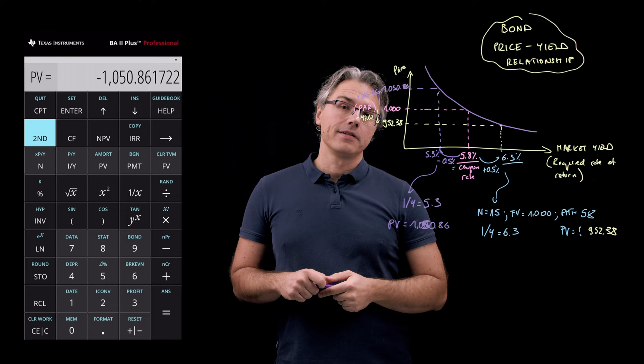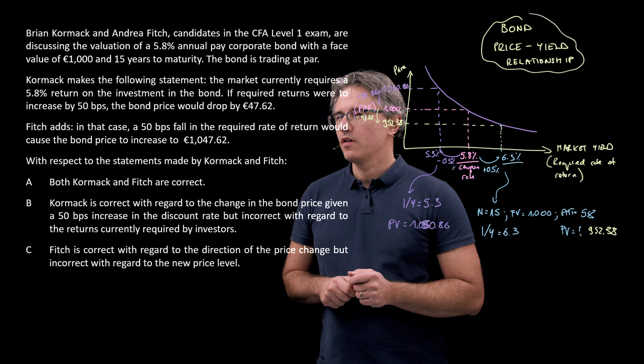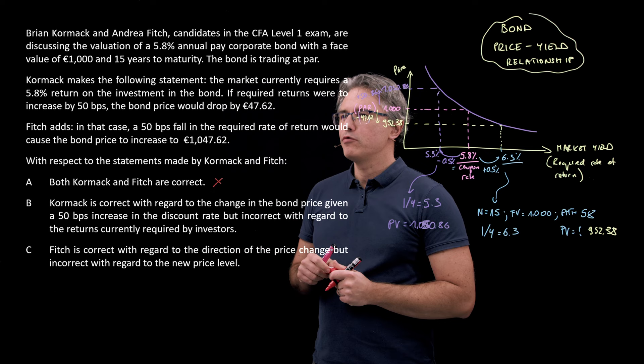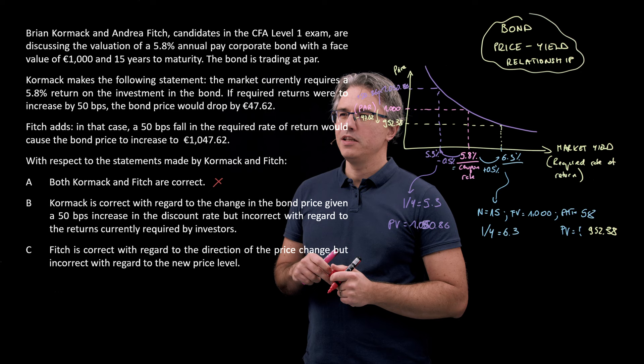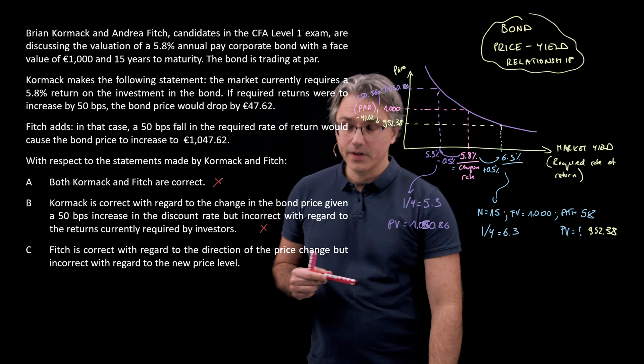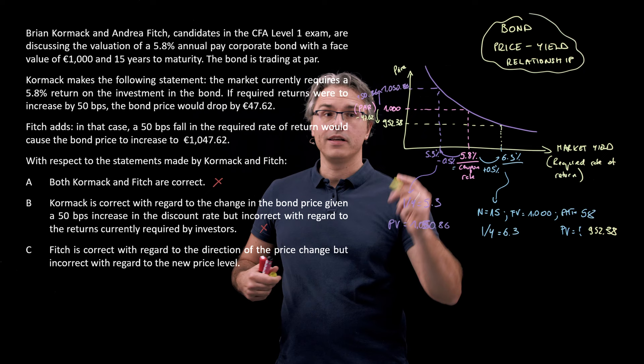So let's analyze the question once again. Answer A, both Cormac and Fitch are correct. Well, that's not the case. Cormac is correct. And Cormac, Brian Cormac is correct with regard to the change in the bond price given a 50 basis point increase in the discount rate, but incorrect with regard to the returns currently required by investors. Well, that's not correct because he is actually correct in both respects. His statement that investors currently require a yield of 5.8%, which is in line with the coupon rate was absolutely fine given that the bond was trading at its par value.